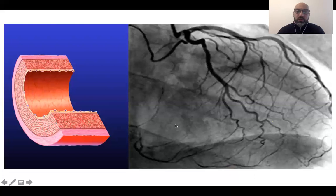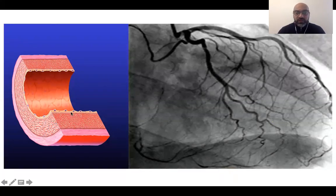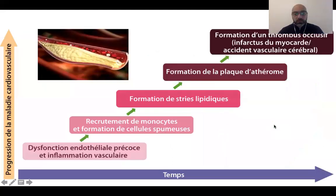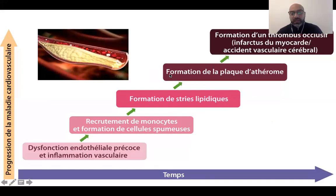En coronarographie, on voit les artères du cœur. Une coupe d'artère montre l'intima, la média et l'adventice. Ce sont des maladies qui vont toucher surtout l'intima : l'endothélium vasculaire va être touché en premier, puis toute l'artère va être malade. Ces facteurs de risque vont agir sur l'artère.